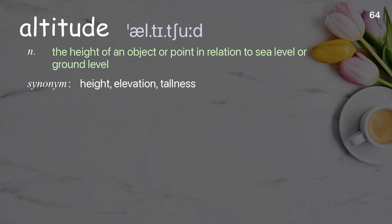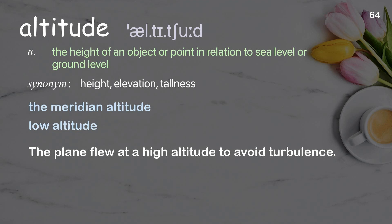Altitude: the height of an object or point in relation to sea level or ground level. Examples: the meridian altitude, low altitude. The plane flew at a high altitude to avoid turbulence.